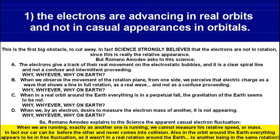Also, in the real orbit around the earth, everything is in a real orbit but appears to be in free fluctuation — as if it was not in a real rotation around the earth. But only when another observer is in the same condition and is observing the same dynamic regarding itself.